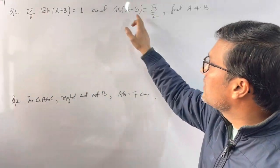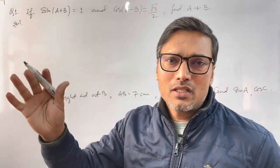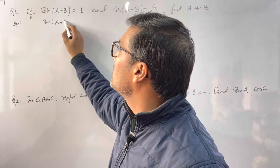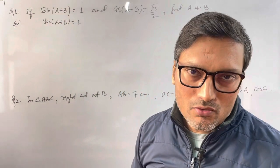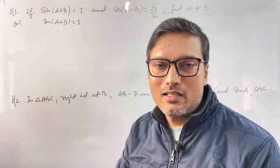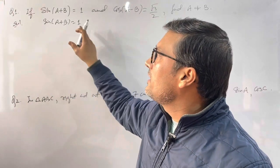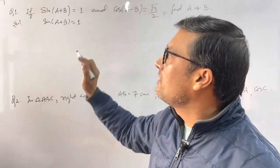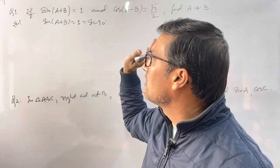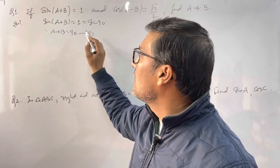Sin(A+B) is equal to 1, and cos(A-B) is equal to √3/2. A and B are acute angles. The question is very simple. First, write the given information. Sin(A+B) is given as 1. You have to think — using the trigonometry table, sin 90° equals 1. So you write this as sin 90°, then compare the angles. So A+B = 90°. This is the first equation.